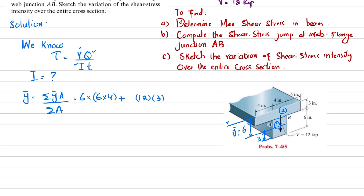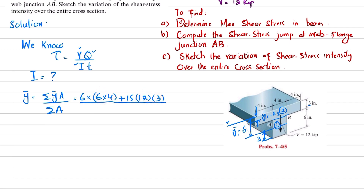The centroidal distance for section 2 from the top is half of 3 = 1.5 inches, so ȳ2 = 1.5. Dividing by the sum of areas: A1 + A2 = 24 + 36 = 60. When you calculate it, ȳ = 3.30 inches.